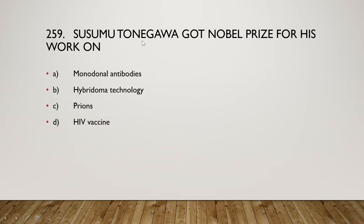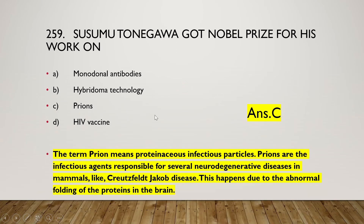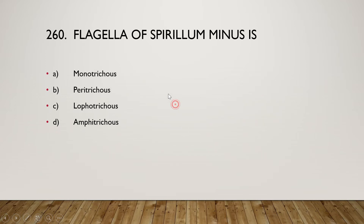Susumu Tonegawa got the Nobel Prize for his work on prions. The term prion means proteinaceous infectious particle. Prions are infectious agents responsible for several neurodegenerative diseases in mammals, like Creutzfeldt-Jakob disease, caused by abnormal folding of proteins in the brain.